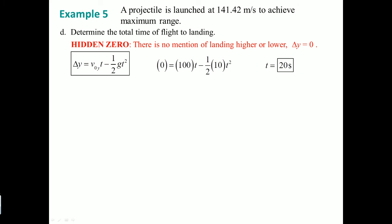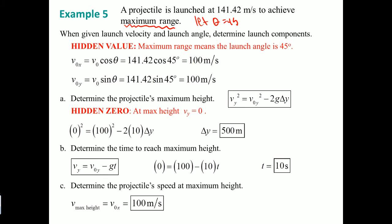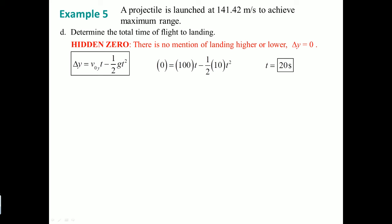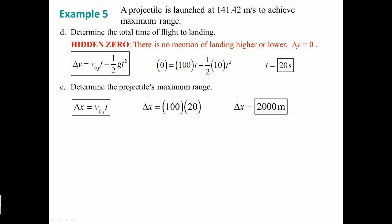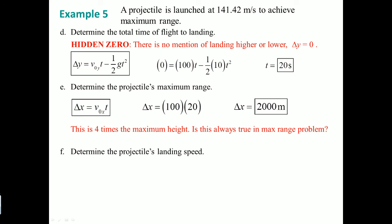For part D, the total time is longer — it's doubled from the time to reach maximum height. If it took 10 seconds to reach the peak, the full path is 20 seconds. For the maximum range, however, it is four times — not double — because of the squared term in the range formula for Delta X.